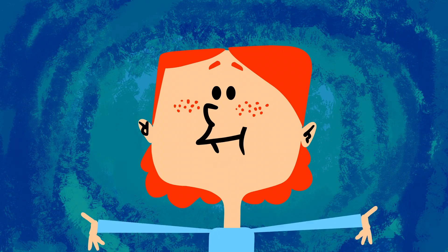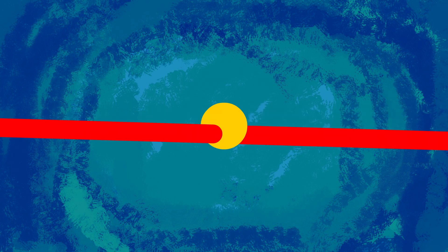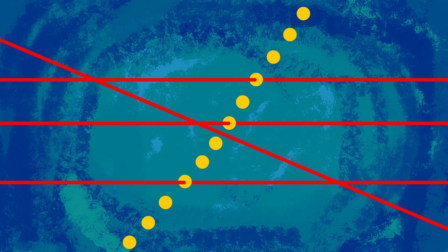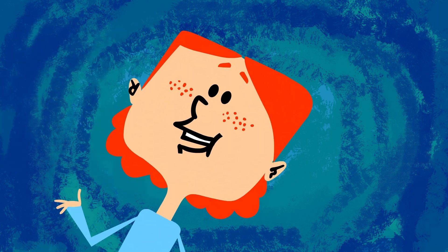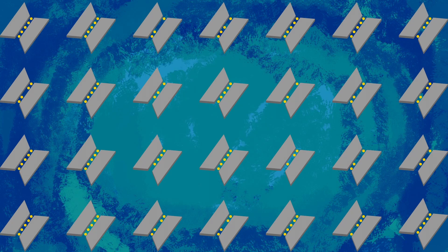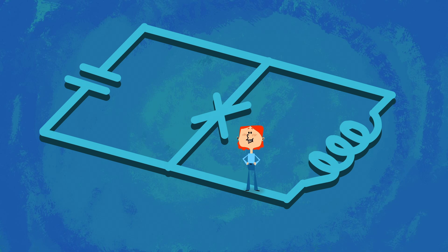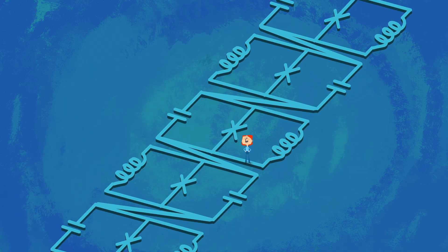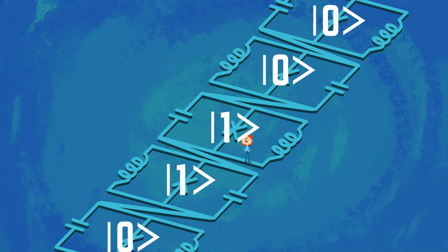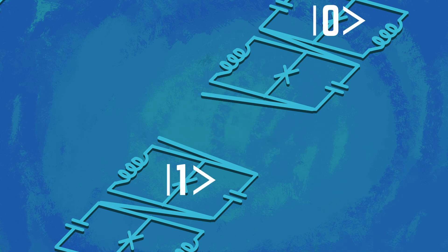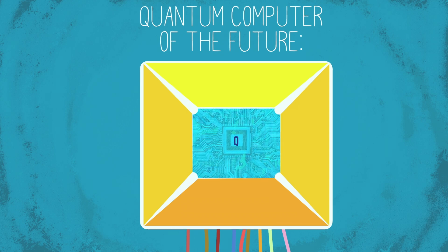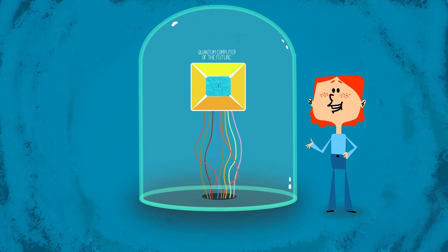Each approach has advantages and disadvantages. Ions can be manipulated very precisely, and they last a long time. But as more ions are added to a trap, it becomes increasingly difficult to control each with precision. We can't currently contain enough ions in a trap to make advanced computations. One possible solution might be to connect many smaller traps that communicate with each other via photons, rather than trying to create one big trap. Superconducting circuits, meanwhile, make operations much faster than trapped ions, and it's easier to scale up the number of circuits in a computer than the number of ions. But the circuits are also more fragile and have a shorter overall lifespan. And as quantum computers advance, they will still be subject to the environmental constraints needed to preserve quantum states.